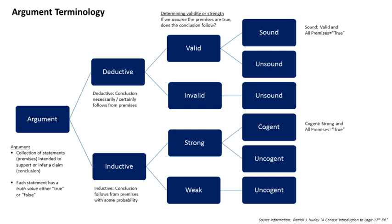Around 1960, Ray Solomonoff founded the theory of universal inductive inference — the theory of prediction based on observations, for example, predicting the next symbol based upon a given series of symbols. This is a formal inductive framework that combines algorithmic information theory with the Bayesian framework. Universal inductive inference is based on solid philosophical foundations, and can be considered as a mathematically formalized Occam's razor. Fundamental ingredients of the theory are the concepts of algorithmic probability and Kolmogorov complexity.